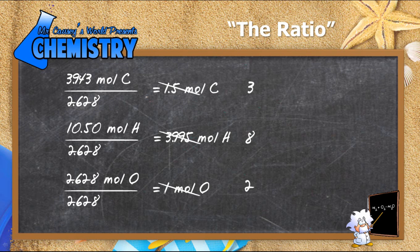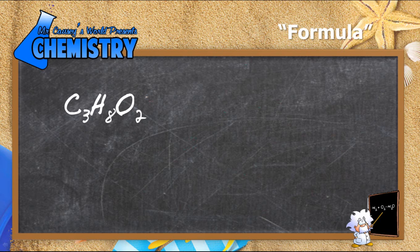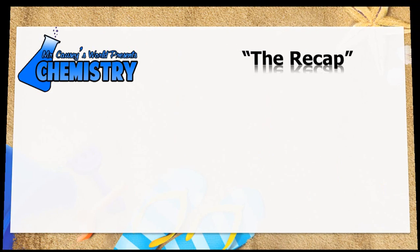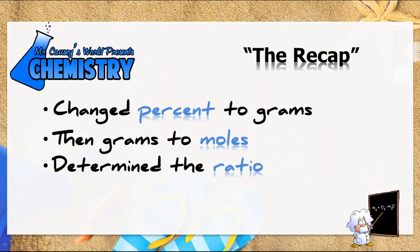So what's our empirical formula? Our empirical formula is C3H8O2. Yes. Percent to grams, then grams to moles. We determined the ratios and wrote the empirical formula. Not too bad.